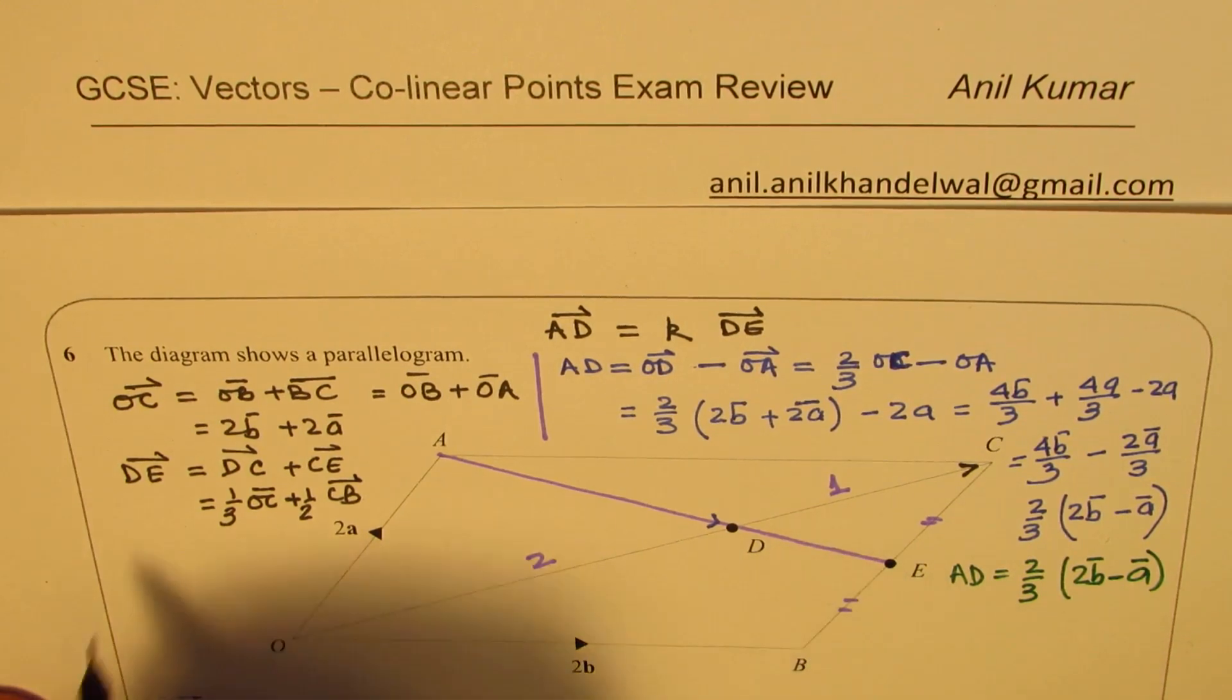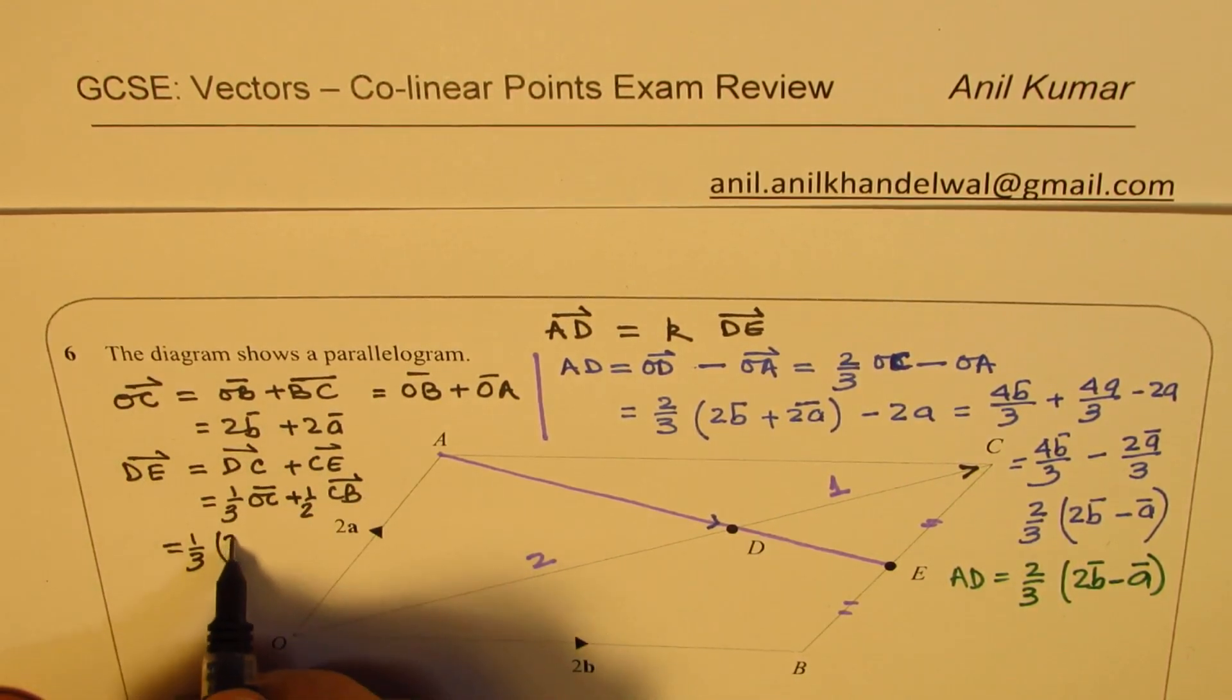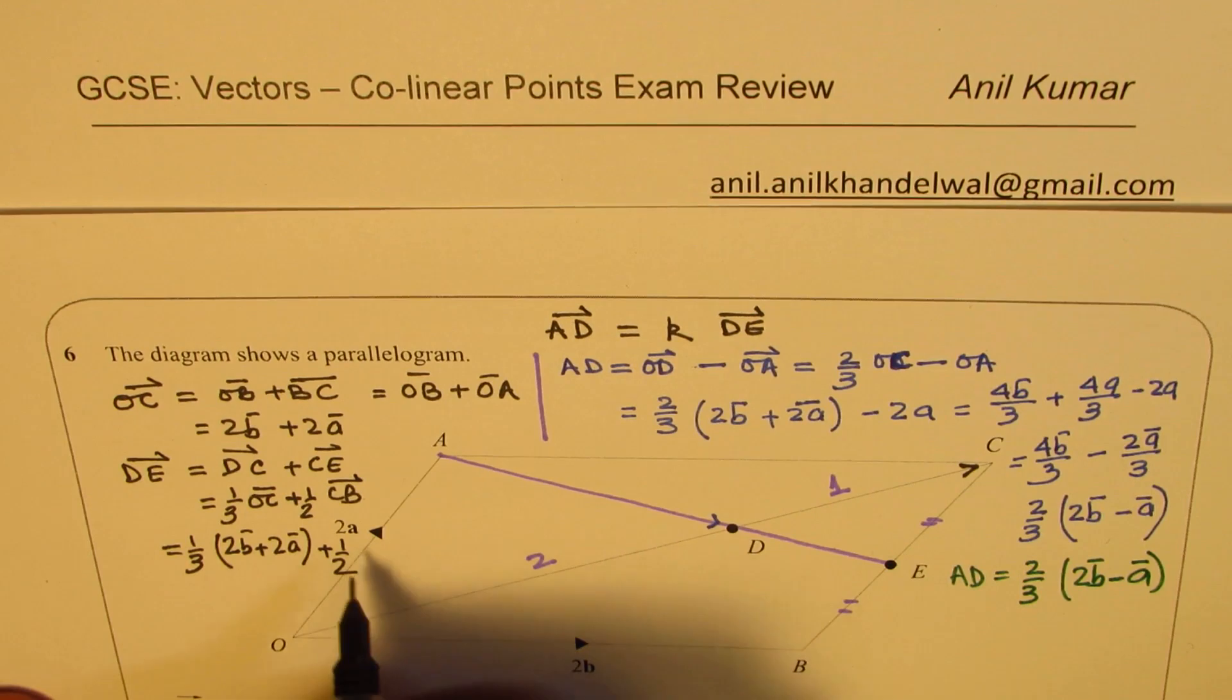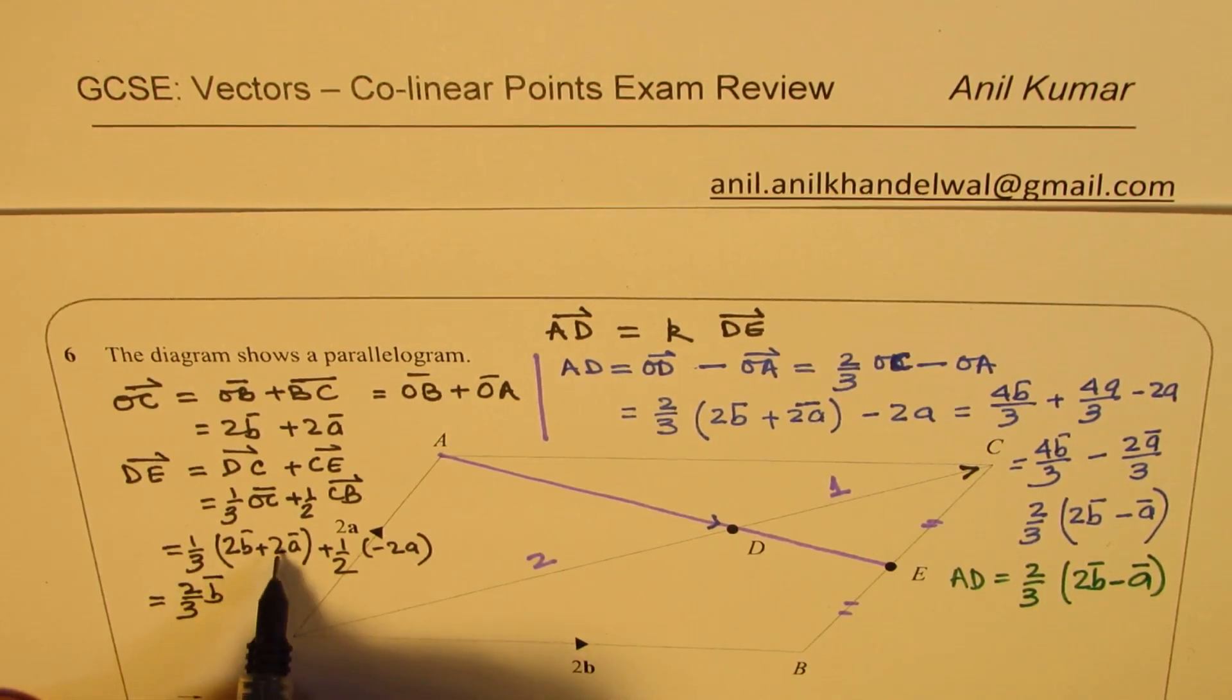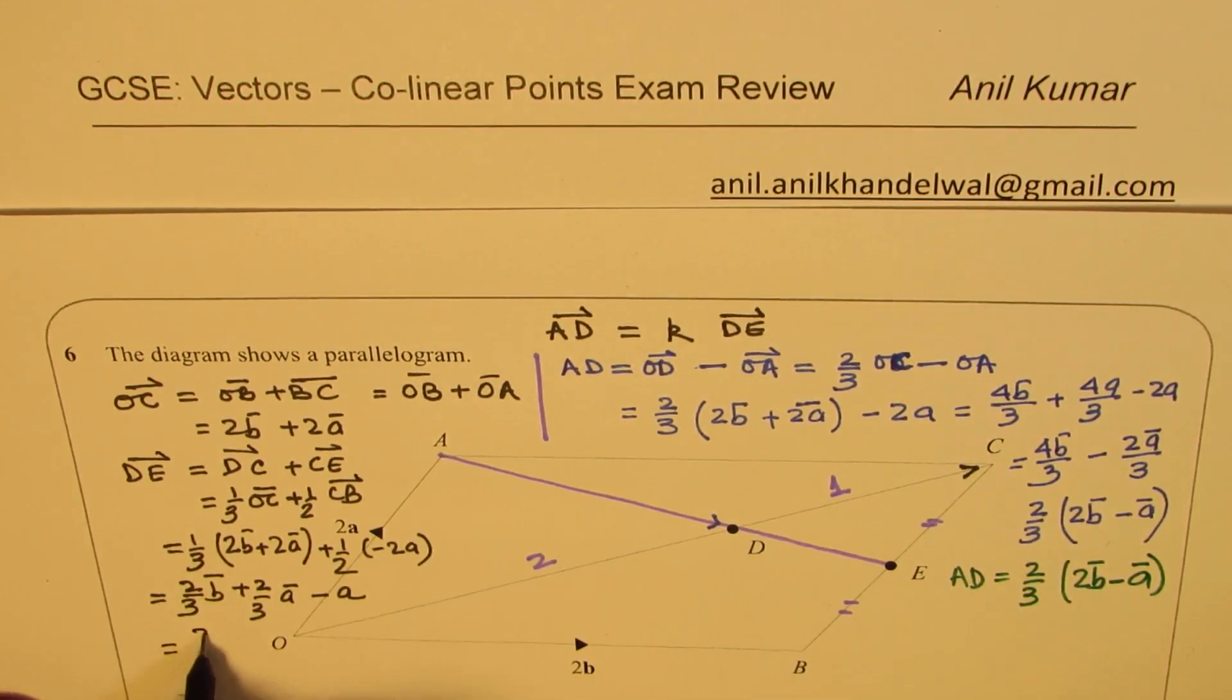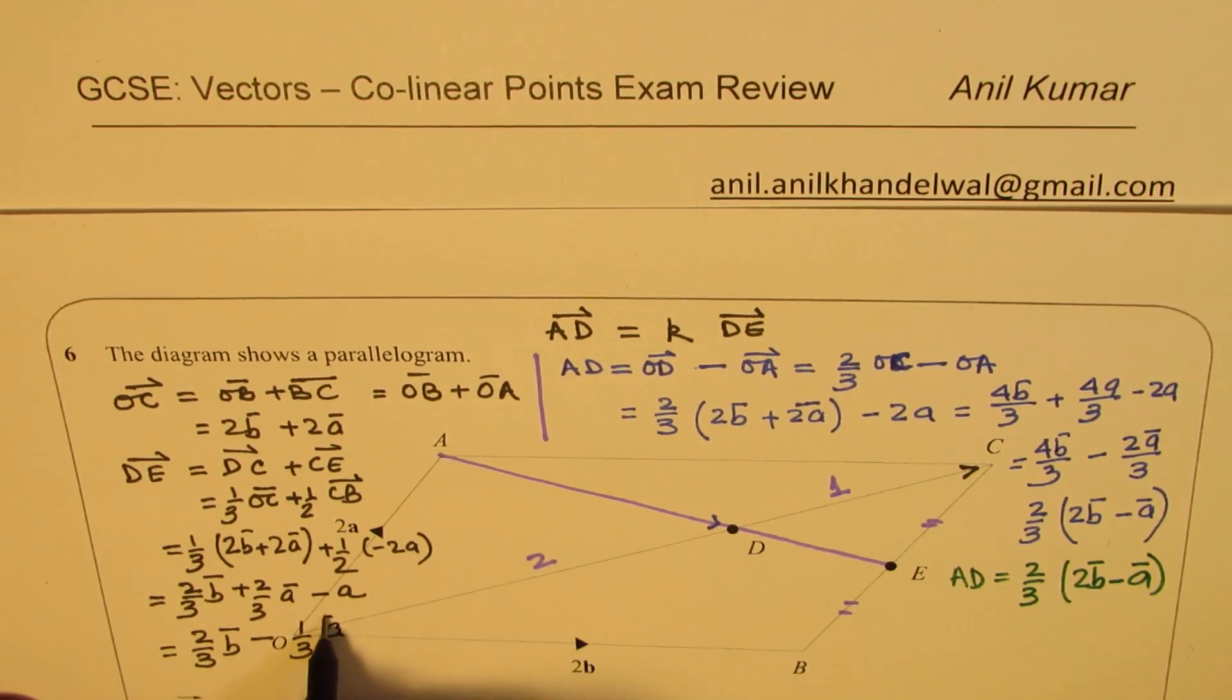CB is minus 2A. Now OC is 2B plus 2A. So we can write this as 1/3 of OC is 2B plus 2A. And then we'll do half of CE which is minus 2A. So half of minus 2A. So let's open this bracket and solve. So here we get 2/3 B and we get plus 2/3 A. And this gives you minus A. Half times minus 2, minus A. Combining the A terms, we get 2/3 B. And this gives you minus 1/3 A.